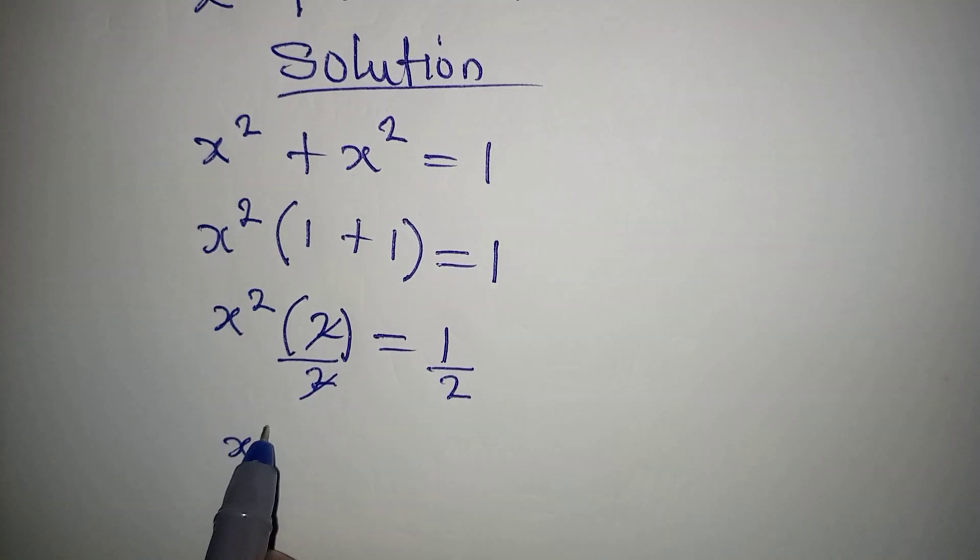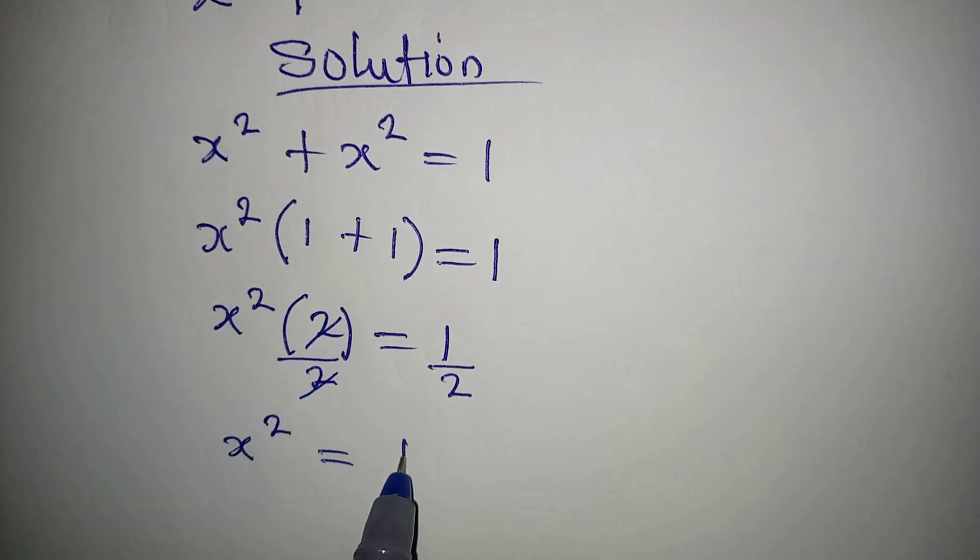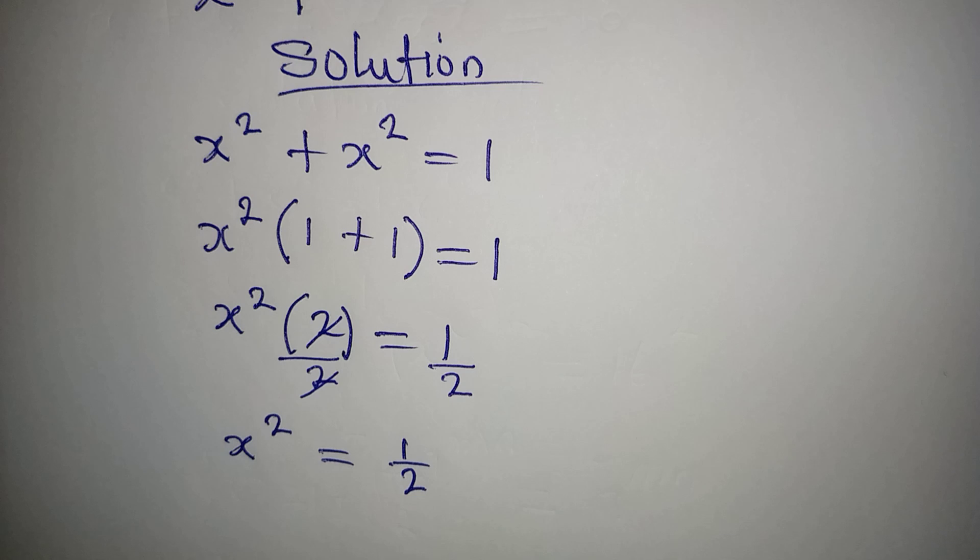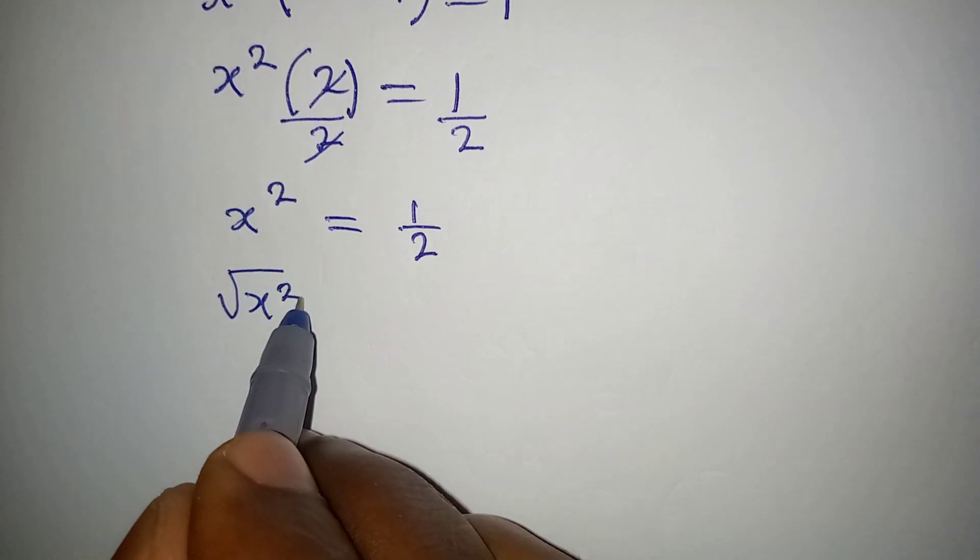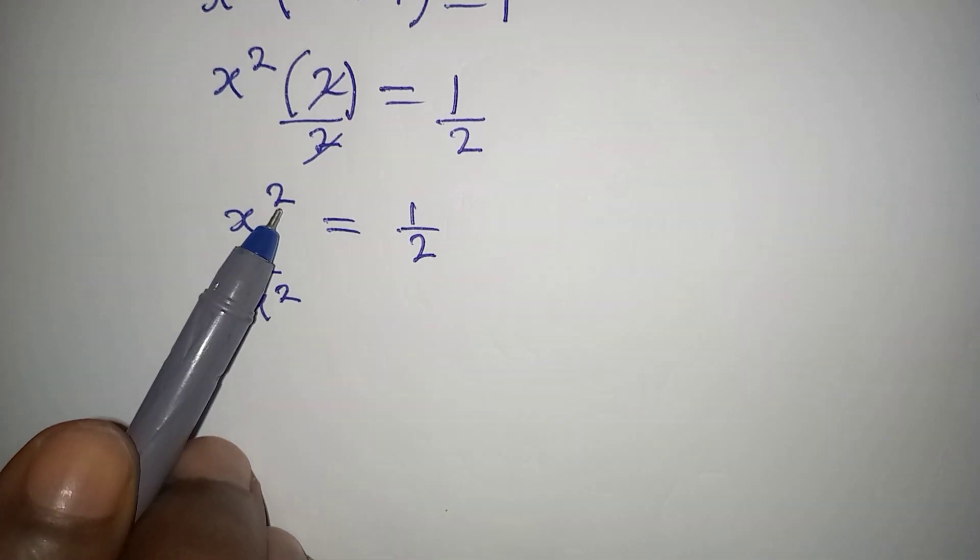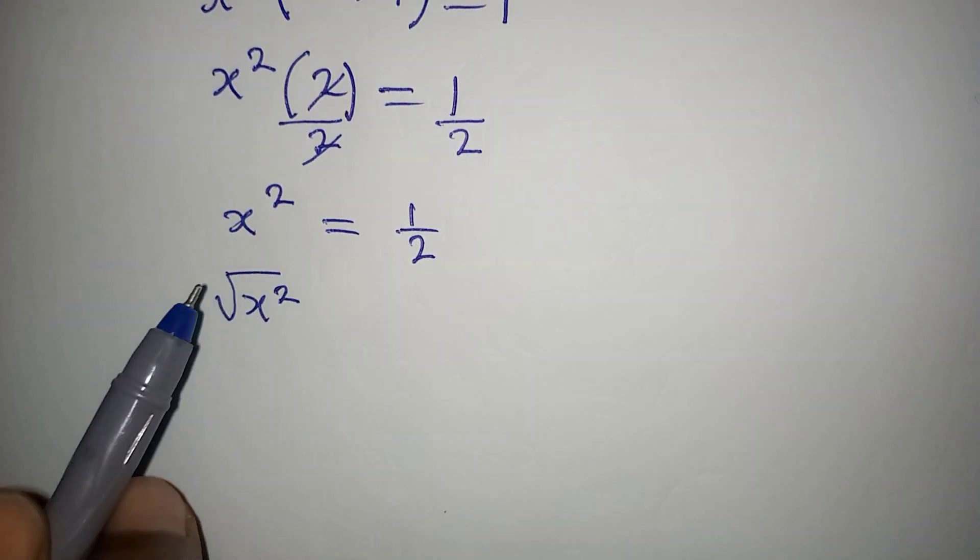Then x squared is equal to 1 over 2. What if I square both sides? Now, what happens if I take the square root of both sides? I can eliminate this square if I take the square root of both sides.